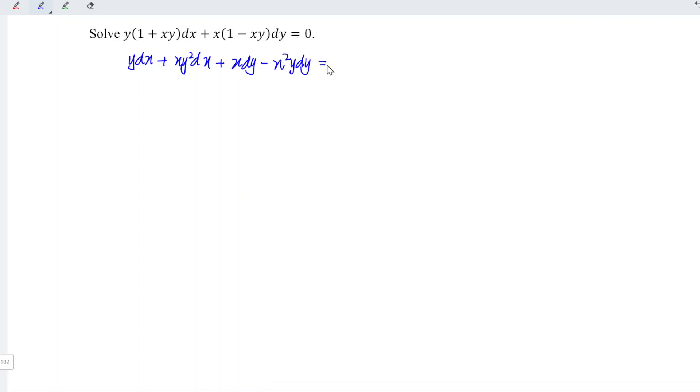This is equal to the right-hand side, which is equal to zero. Recall that if we differentiate y we obtain dy, when we differentiate x we obtain dx. So we can group these two together and form the exact form.